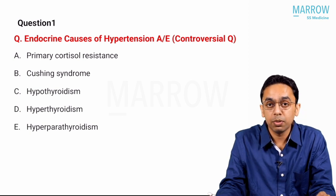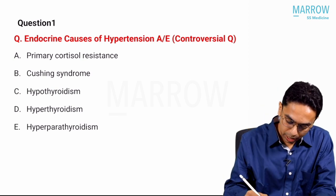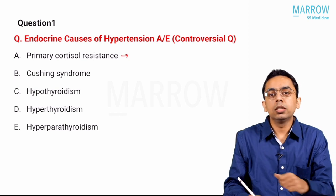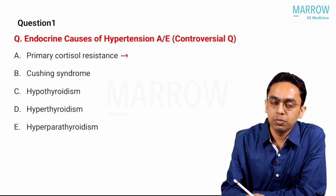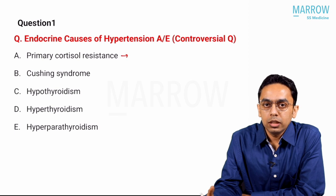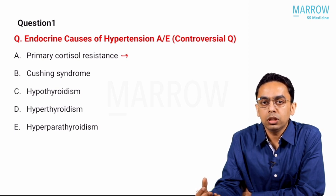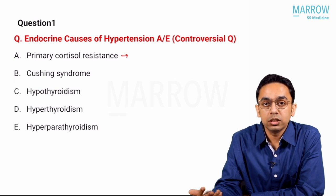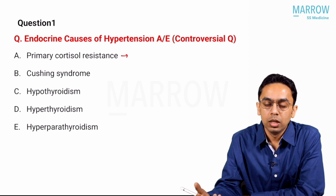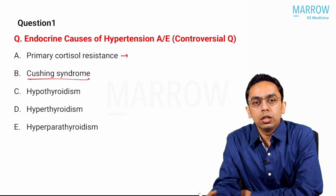We'll see one by one. Primary cortisol resistance was already discussed in our last lecture in question number 39. There we have glucocorticoid resistance with a reset point — cortisol increases and acts on the mineralocorticoid receptor, thereby causing hypertension. Primary cortisol resistance, glucocorticoid resistance, or Chorosis syndrome has already been discussed.